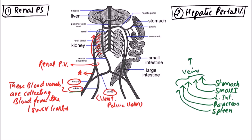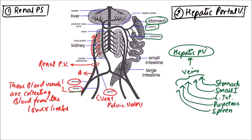Here we can observe that a gastric vein comes from the stomach, mesenteric veins come from the intestinal part, and some veins are also contributed by the pancreas and spleen. Finally the hepatic portal vein is formed. This hepatic portal vein fuses with another vein which is known as the ventral abdominal vein.